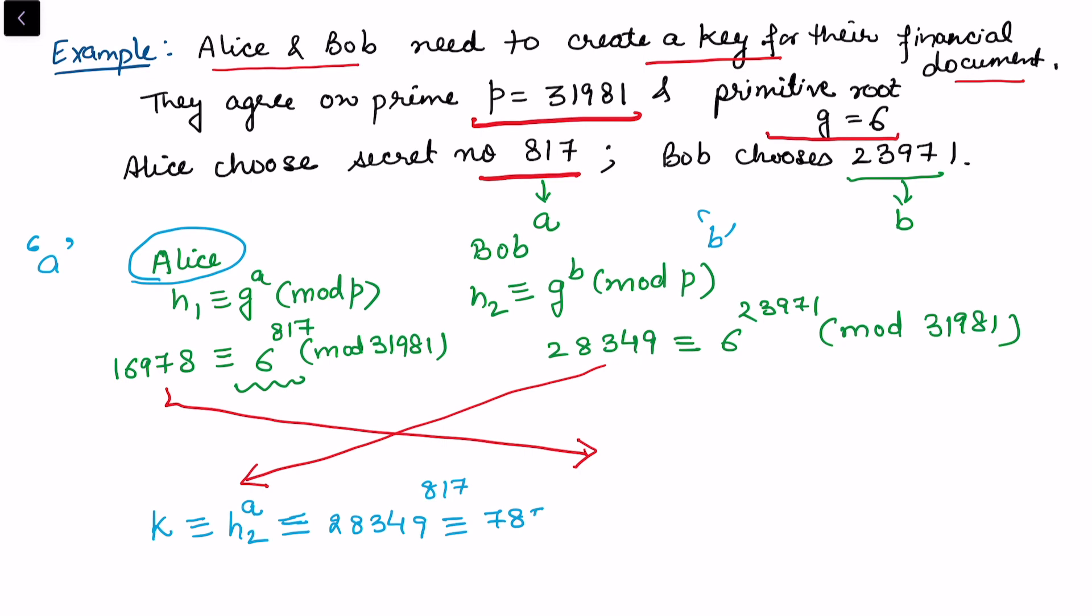Separately, Bob calculated k, which is congruent to h1 to the power b. h1 is shared by Alice and b is already available with Bob. h1 is 16978 raised to power 23971. This is congruent to 7857 with respect to mod 31981.